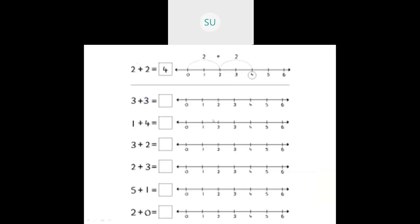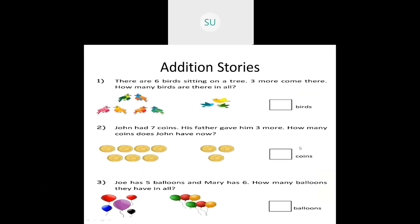For two plus two: jump to two first, then add steps of one — one, two — landing on four. So two plus two is four. This is how you do addition using a number line.